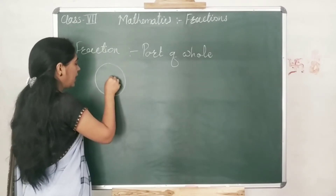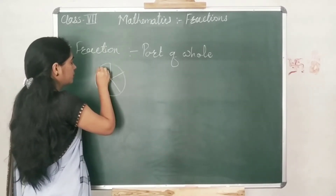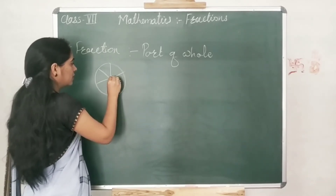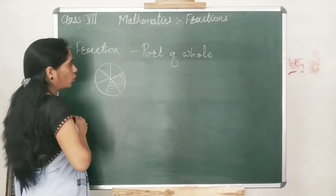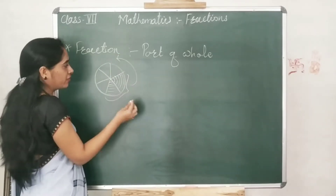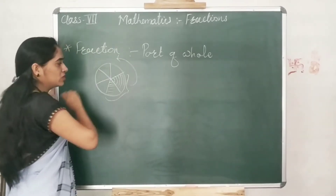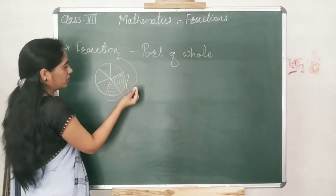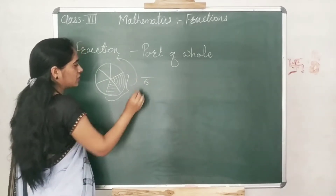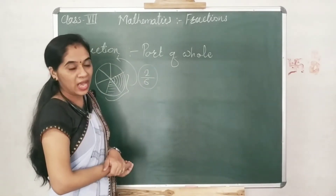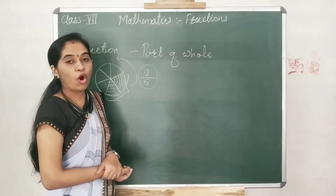For example, I have a pizza and I have made some pieces of it. When I am eating one part — suppose this is another part — these two parts are called a fraction of the whole pizza. The pizza was divided into six parts: one, two, three, four, five, six. Out of six, I ate two. So what I have written is called a fraction form of a number, also called a fractional number.